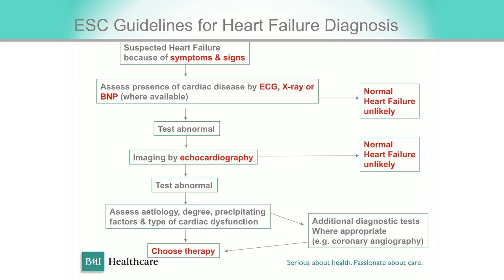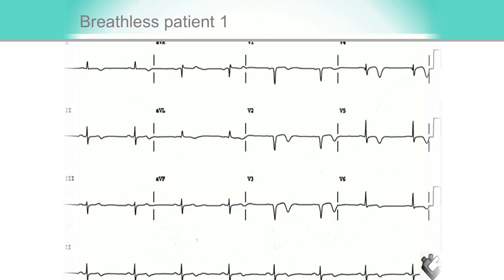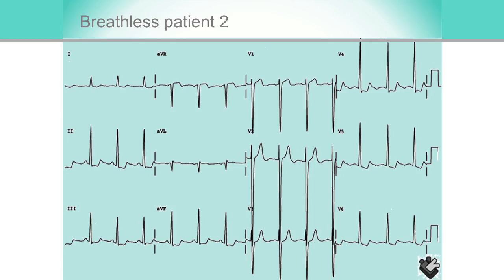To summarize the investigation of heart failure, the ESC — European Society of Cardiology — recommends ECG, chest X-ray, and BNP. If any one of them is abnormal, go ahead with echocardiography. This ECG of a breathless patient shows Q waves anteriorly, so the cause of heart failure is ischemic heart disease. And this patient has severe left ventricular hypertrophy with a deep S-wave, so the cause of heart failure is diastolic heart failure caused by hypertension.